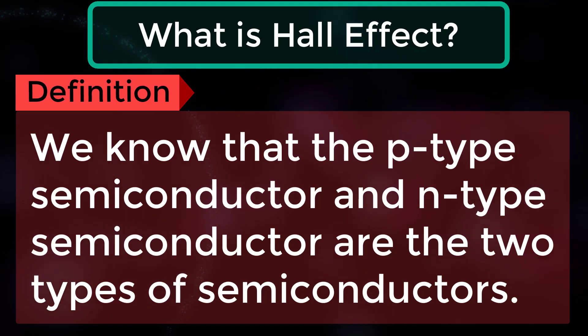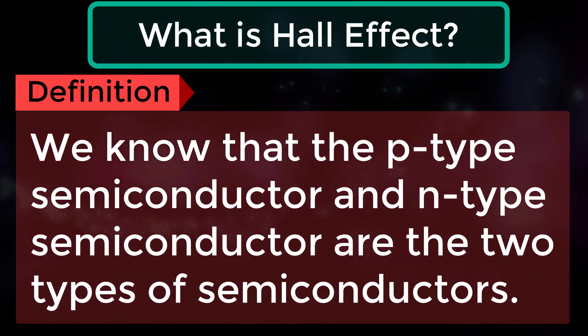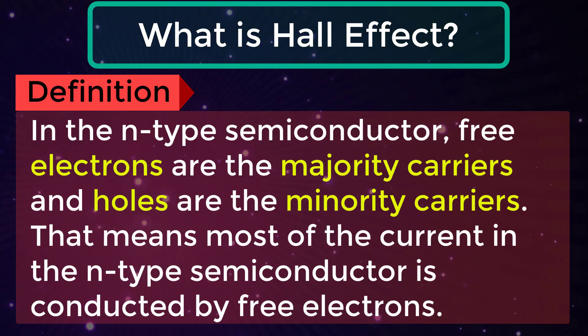We know that the P-type semiconductor and N-type semiconductor are the two types of semiconductors. In the N-type semiconductor, free electrons are the majority carriers and holes are the minority carriers. That means most of the current in the N-type semiconductor is conducted by free electrons.